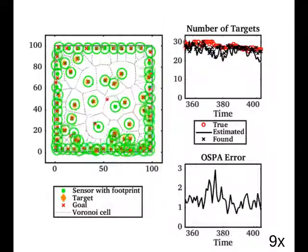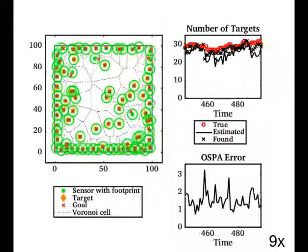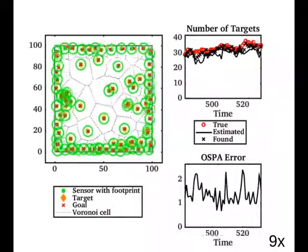When a new target enters the environment and moves towards the center, the robot that first detects it will follow the target away from the boundary as long as there are other robots nearby to take its place.